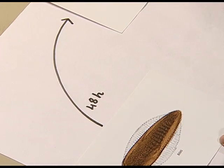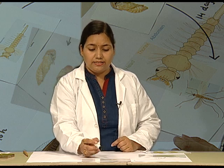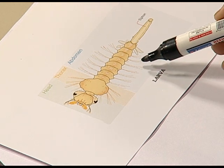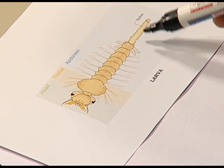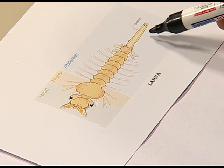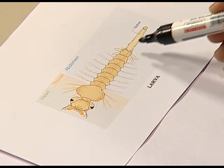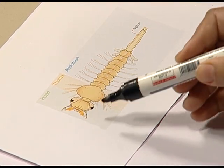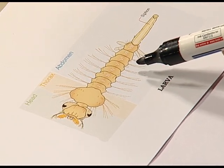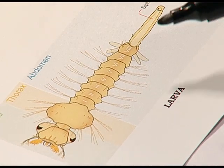This larva is a hairy structure, and these hairs are called bristles. This is the siphon, which is responsible for respiration. The larva is divided into head, thorax, and abdomen, which consists of seven to eight segments.